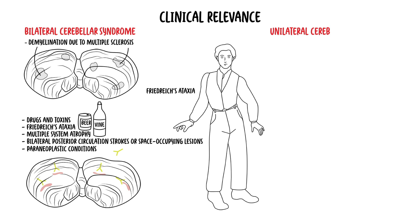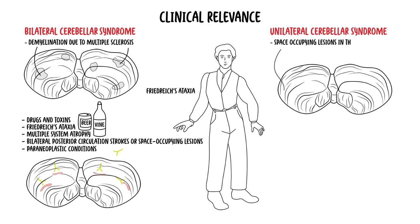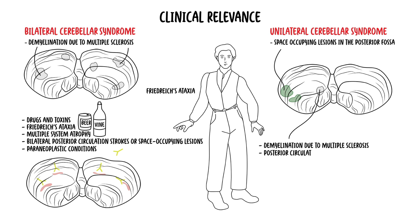Unilateral cerebellar syndromes are caused by space-occupying lesions in the posterior fossa — this could be an abscess, a tumour or a benign tumour — demyelination again due to multiple sclerosis, posterior circulation infarction, a hemorrhagic stroke, and also paraneoplastic syndrome.